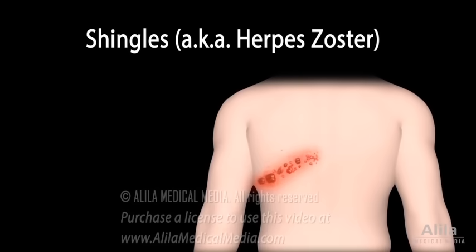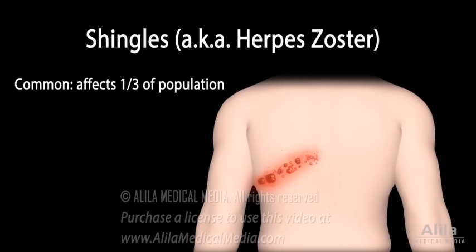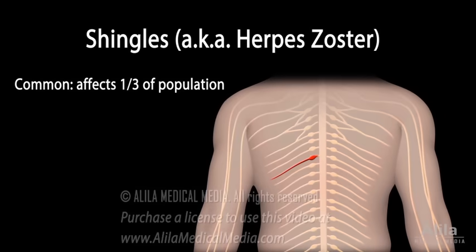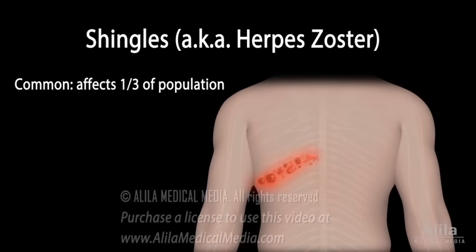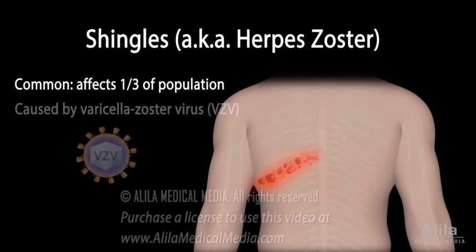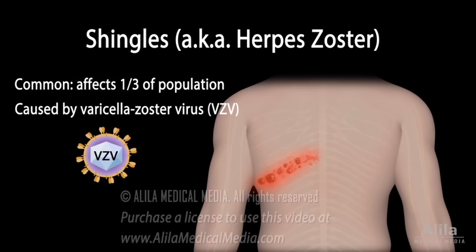Shingles, also known as herpes zoster, is a common condition characterized by nerve damage and a painful skin rash. It is caused by the varicella zoster virus, the same virus that causes chicken pox.